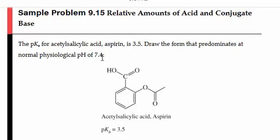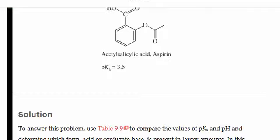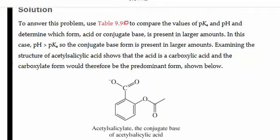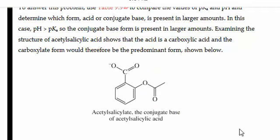We are given a pH that is greater than the pKa, so that means the conjugate base is going to predominate. The conjugate base of a carboxylic acid is a carboxylate.